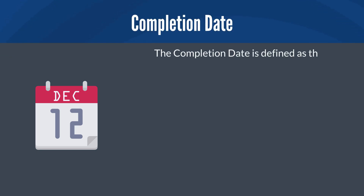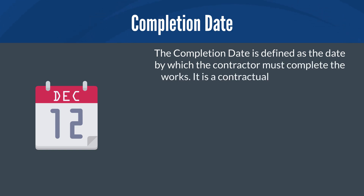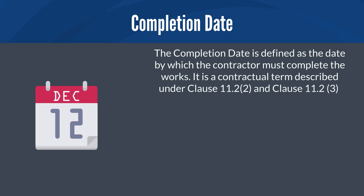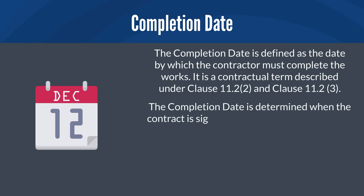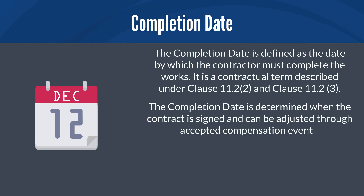Under NEC4, the completion date is defined as the date by which the contractor must complete the works. It is a contractual term described under Clause 11.2.2 and Clause 11.2.3. The completion date is determined when the contract is signed and can be adjusted for accepted compensation events. This is the date the contractor must aim to complete all works stipulated in the contract to avoid liability for delay damages.